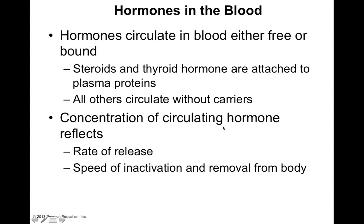The concentration of circulating hormones depends on the rate of hormone release as well as the speed of inactivation and removal of that particular hormone. If a hormone is released faster than it's inactivated or removed, hormone concentration in the blood will increase over time. If the hormone is inactivated and removed faster than it's released, that concentration will decrease over time. And if the rate of release equals the rate of inactivation and removal, then hormone concentration will remain constant.